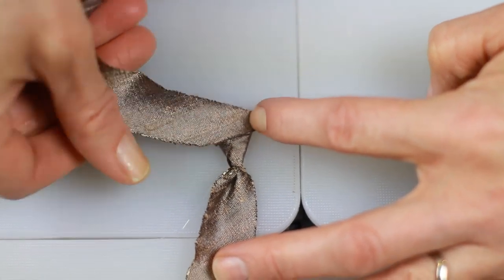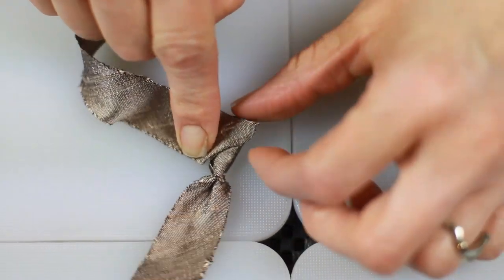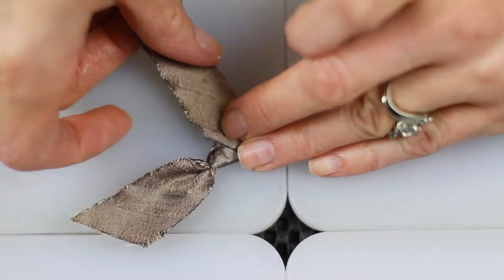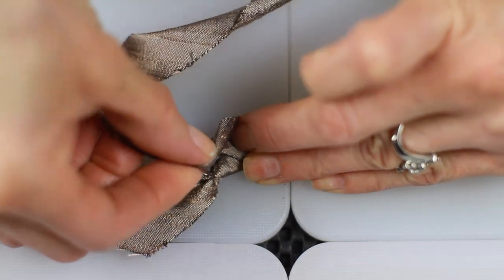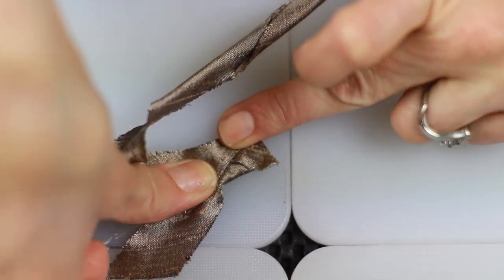So every time you fold over, you want to make a nice folded angle and keep the top side of the ribbon up. You can see that when I fold it over there, I'm always keeping the same side of the ribbon up.